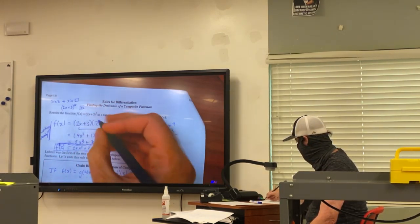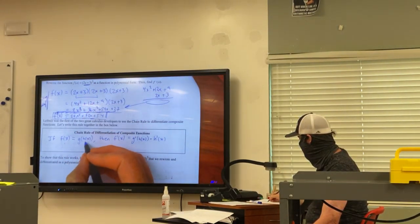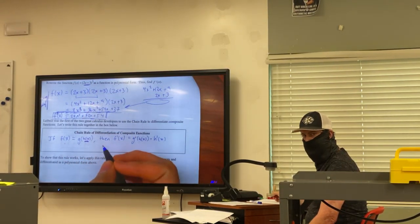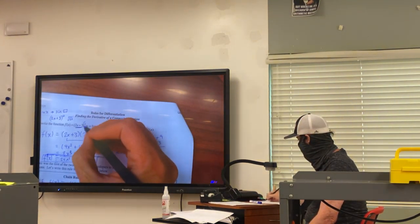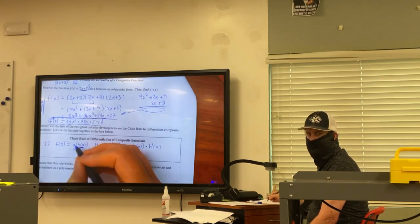So if I had this, in this case, that 2x plus 3 part is my inside. It's my h of x. And then just the squared part, or the cubed part, that part is my g of x.